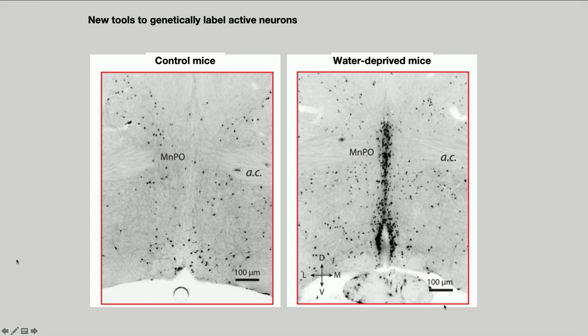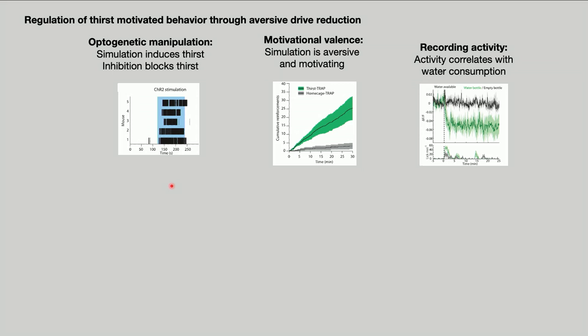As a first experiment, we labeled the specific set of cells in the median preoptic nucleus in water-deprived mice. In control mice with normal water access, you inject the drug and see only a few random scattered cells. But when you take away water for just 24 to 48 hours, suddenly you see a very specific population of cells in this one particular part of the brain light up and essentially nowhere else in the brain — these are the cells probably responsible for thirst.